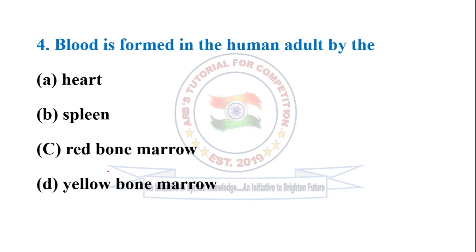Question number four: blood is formed in the human adult by the? It is red bone marrow, so option C is correct.